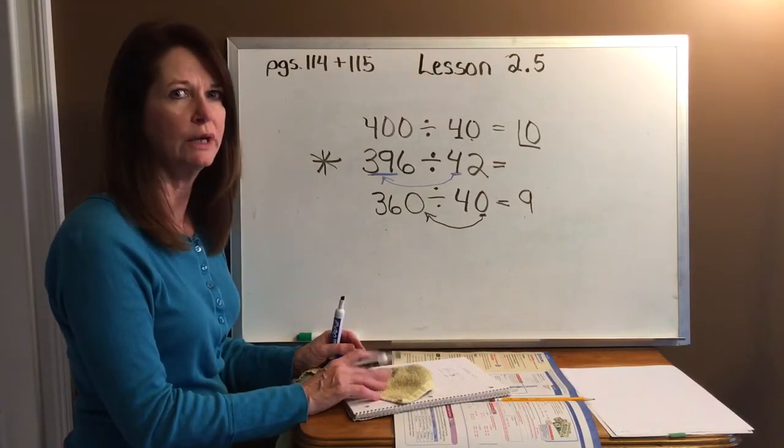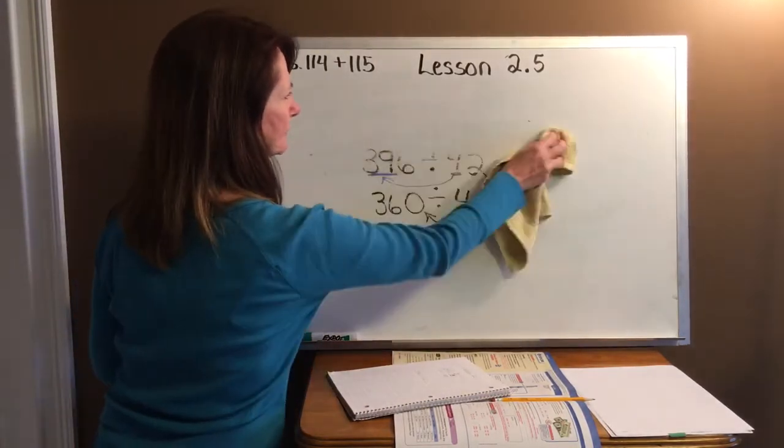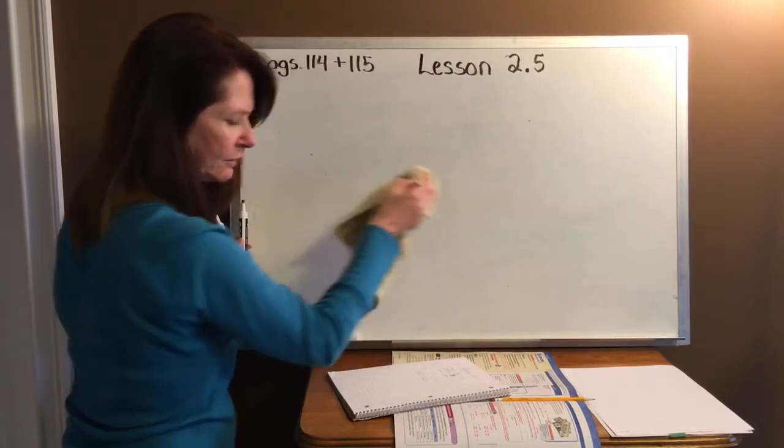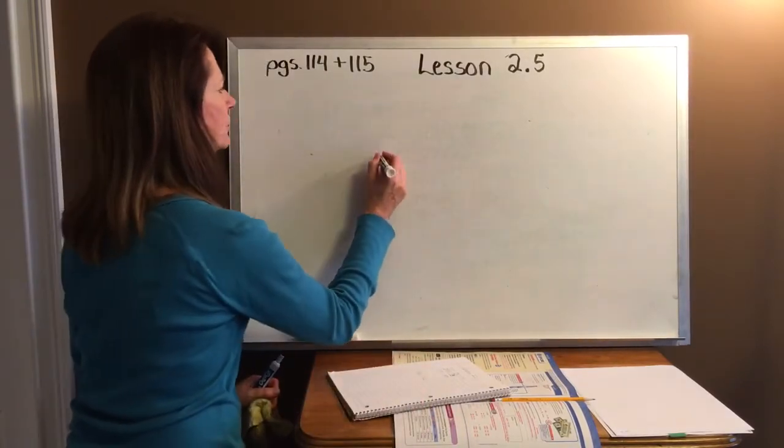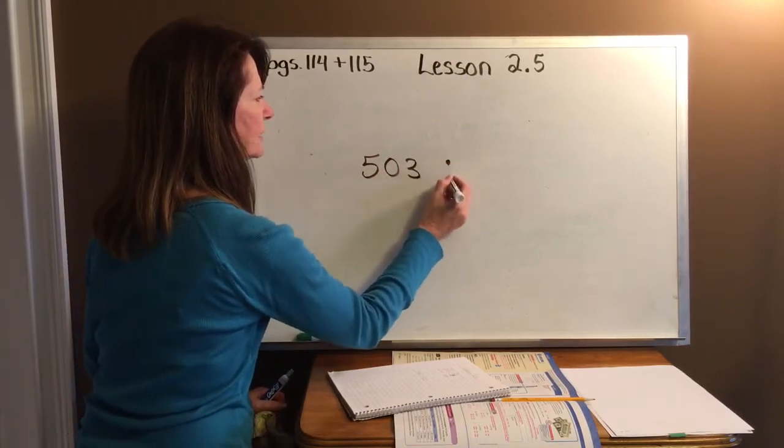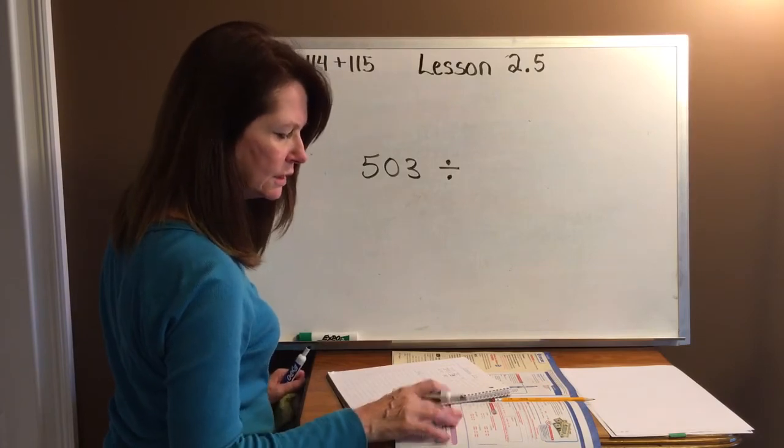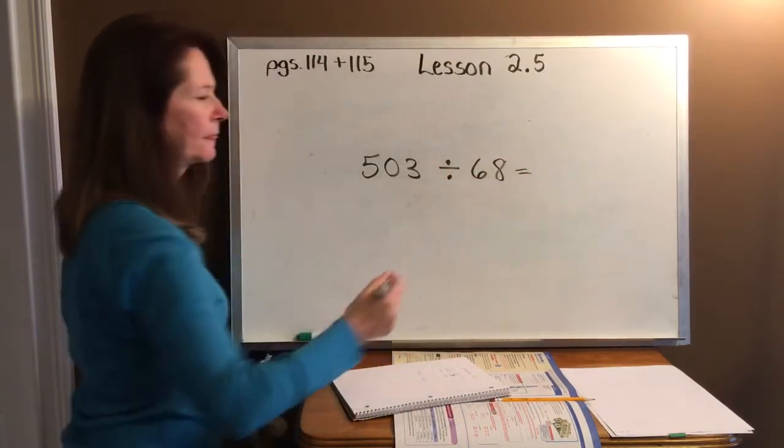Should we do one more? Real quick. Let's do one more. Maybe one that doesn't go to 9 and 10. Let's see about that. All right. How about if we did 503 divided by, let's see, 68 equals.